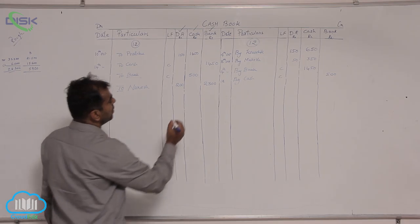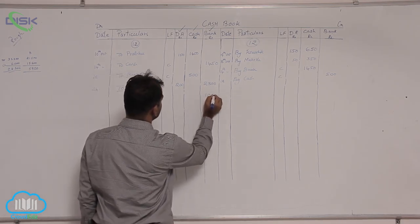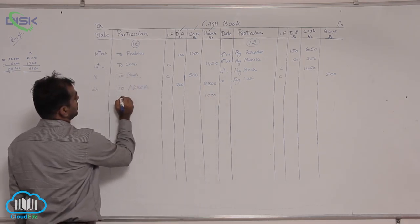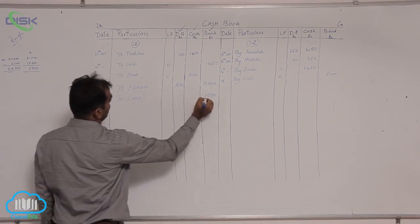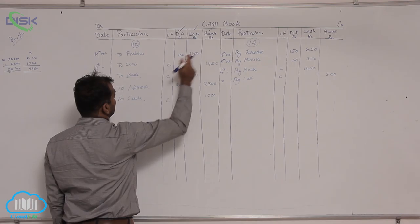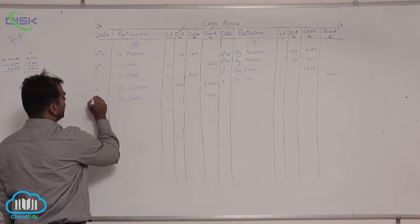So the amount being 1000 and cash is getting deposited in the bank, so cash is the reason for debiting bank, cash and bank are involved contra entry, date is 29th.